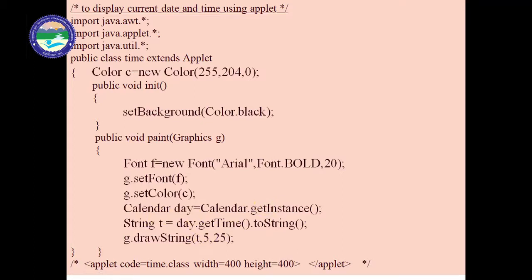From day we extract only the time using day.getTime().toString(), because day contains date, day of week, time with hours, minutes, and seconds. We are extracting only the time. It will be returned to t, so t is a String variable containing the current time converted to a string. Then g.drawString(t, 5, 25) - through drawString we print t at location (5, 25), so it will display the current time accordingly.